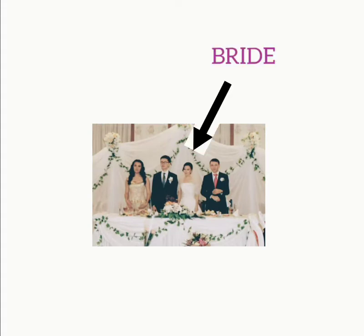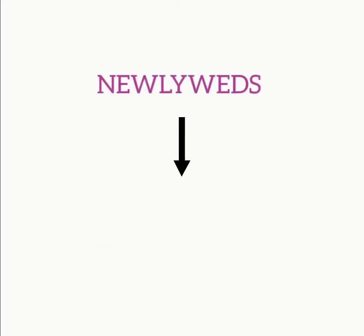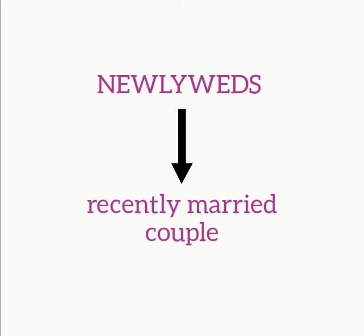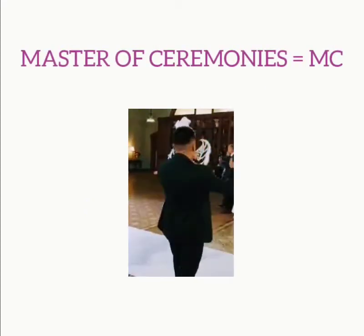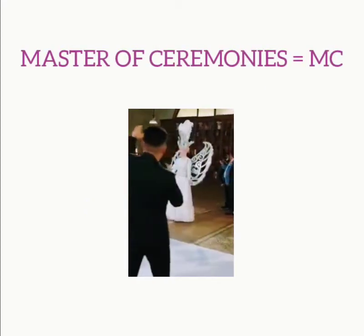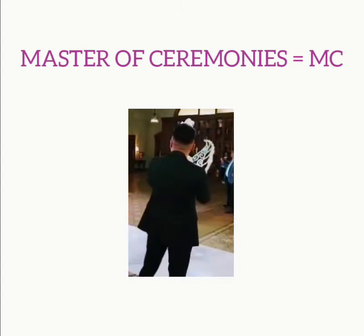People who get married at a wedding are the bride and the groom. The bridesmaid and the best man help the bride and groom with preparations for the wedding. Newlyweds are people who have recently got married. A master of ceremonies, or MC, is a person who conducts the wedding ceremony and announces toasts and speeches.